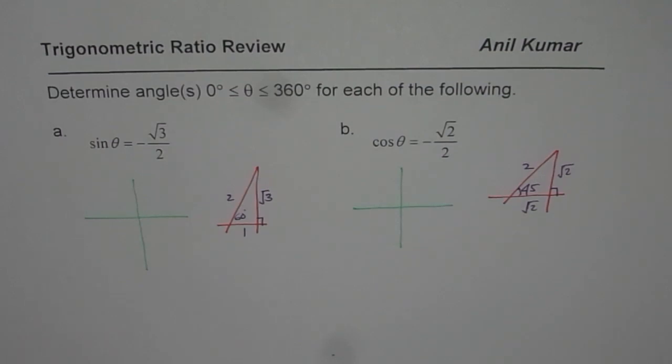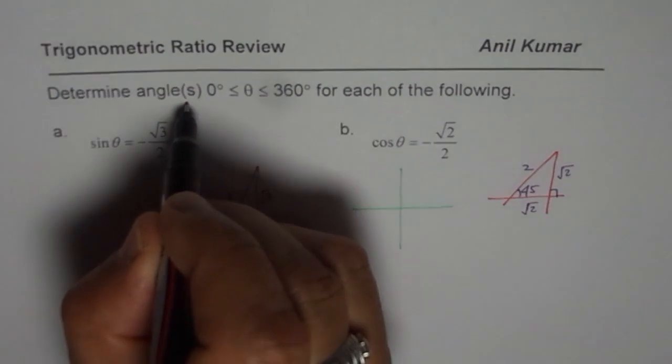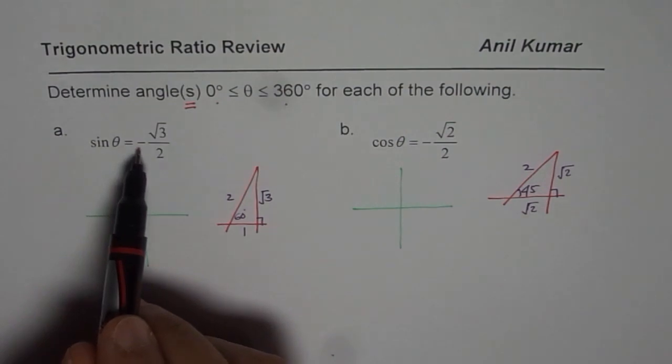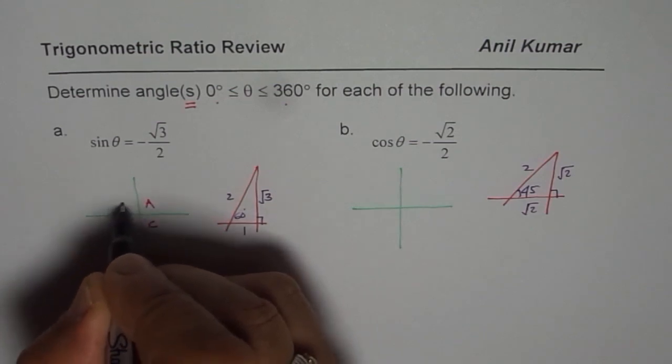Now we have to see in which quadrant the angle lies. Angles within 0 to 360, remember that. Sin θ equals to negative value, so apply the cost rule.